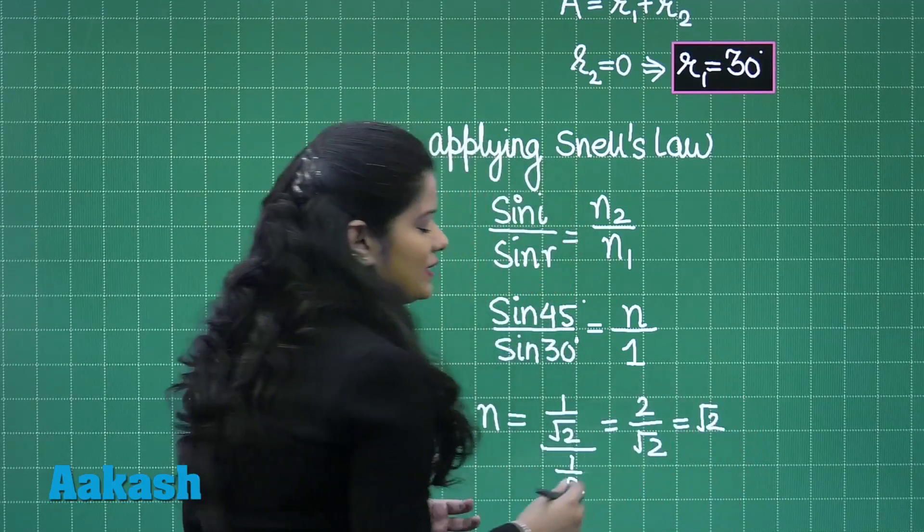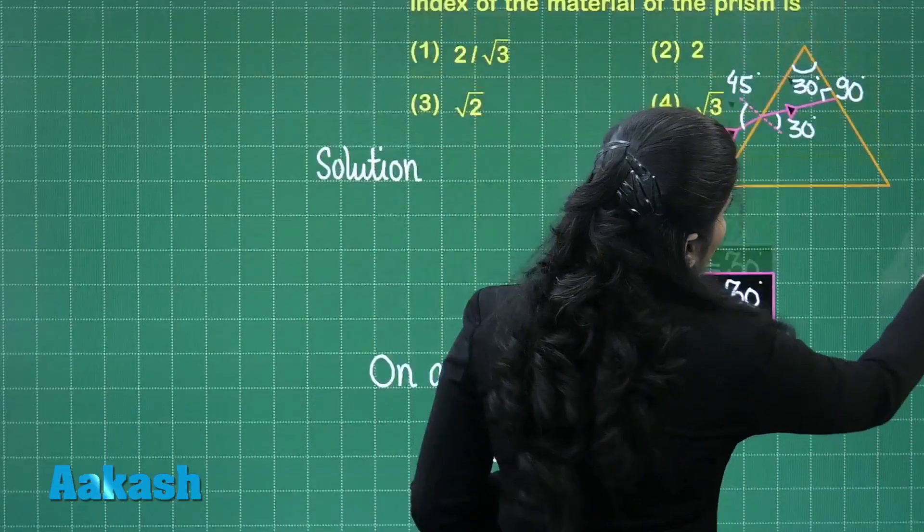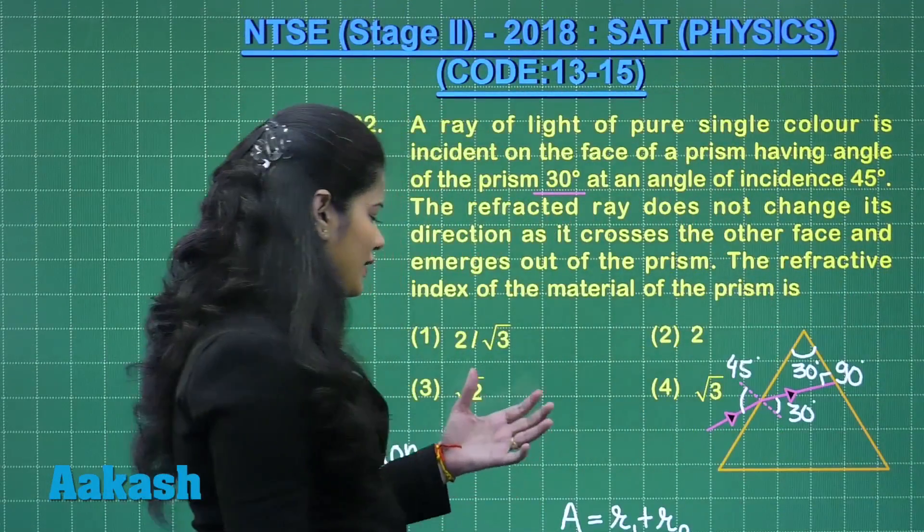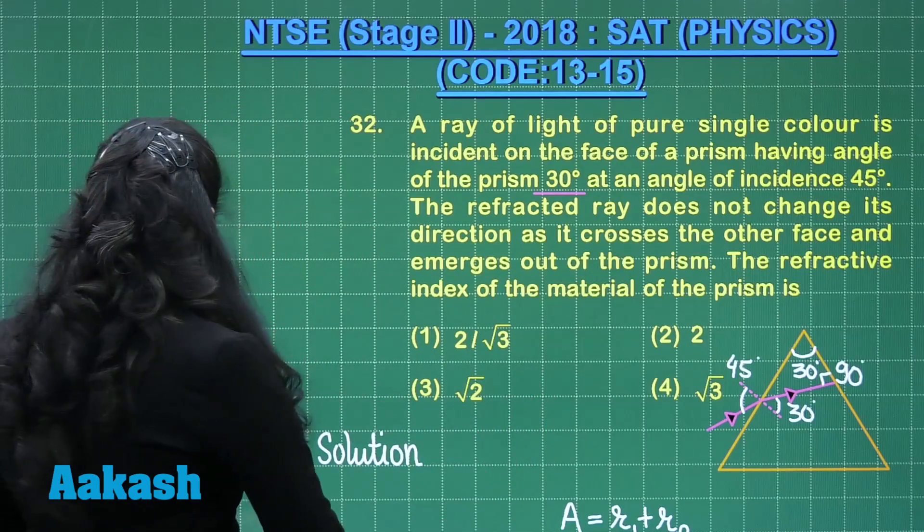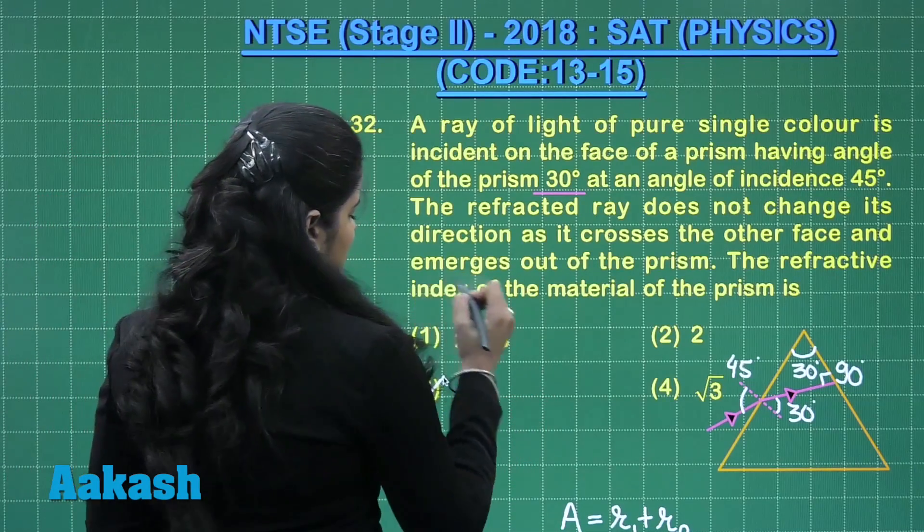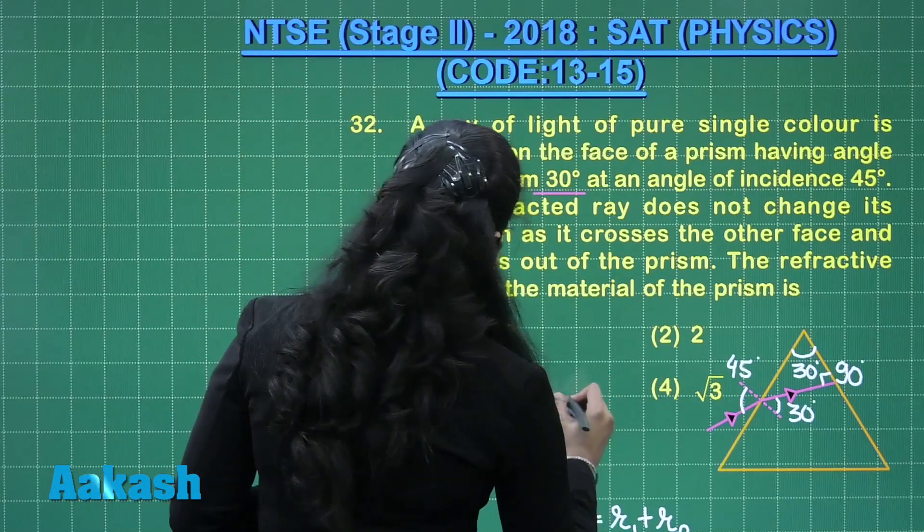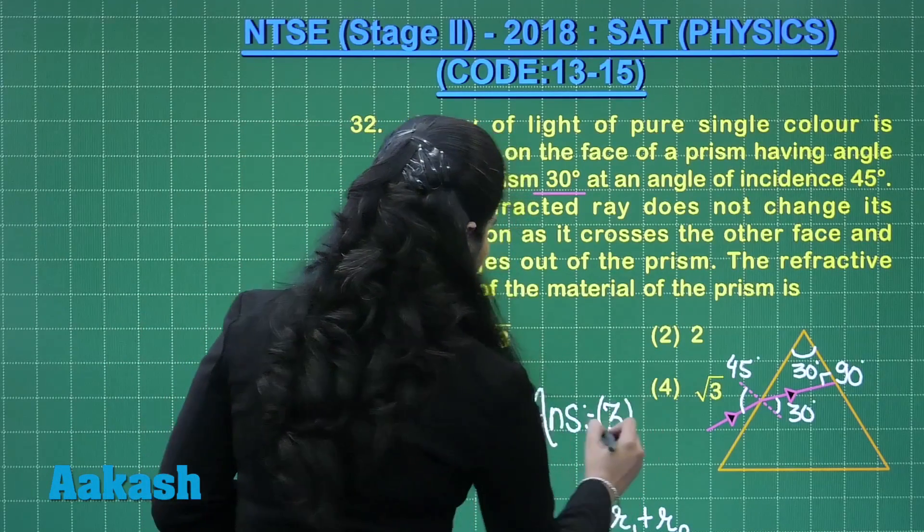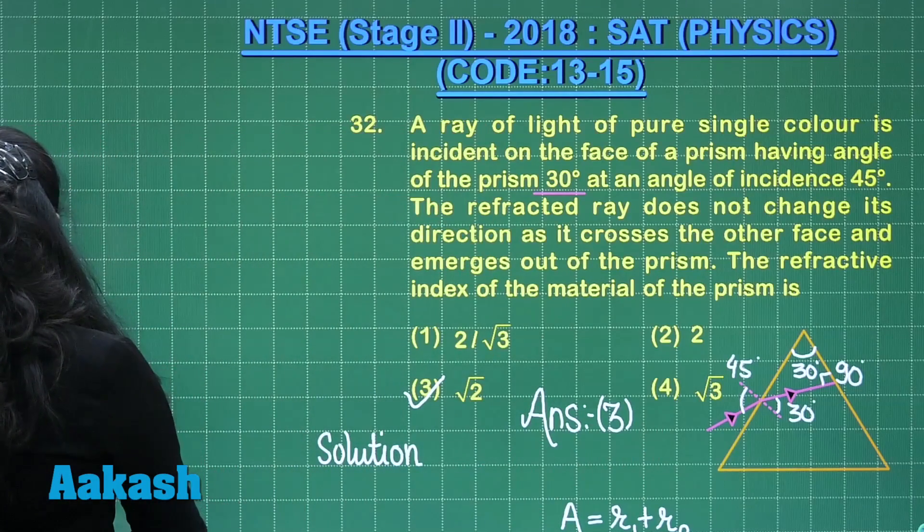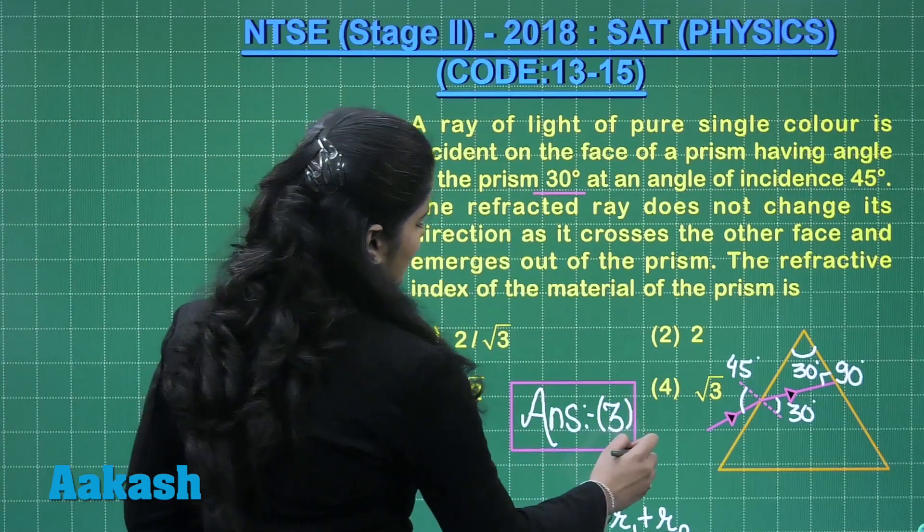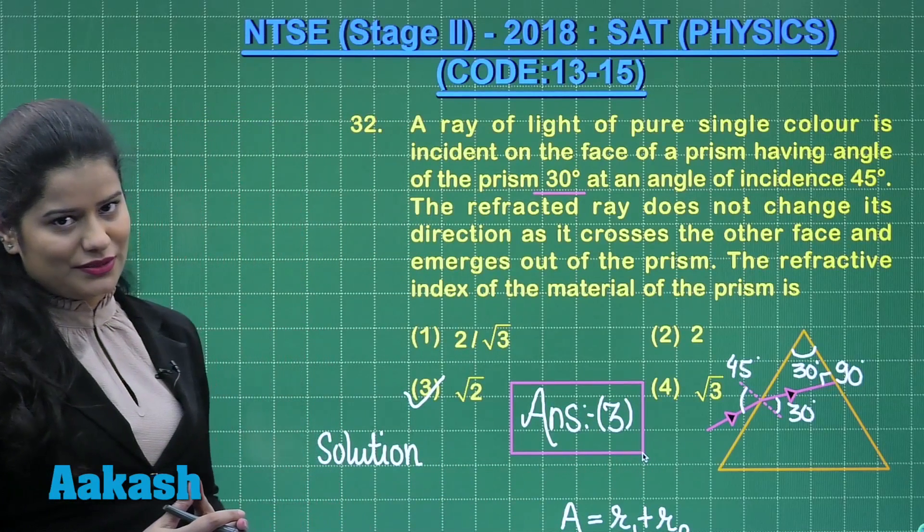So the refractive index of the prism comes out to be root 2. Let's have a quick look at the options. Here you can see that option 3 is the correct option. The answer of this question is option 3. So I hope this question is clear to you. Now let us take up the next question.